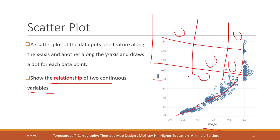The scatter plot matrix is used to show the relationships among three or more variables. A single scatter plot is great for showing the relationship between two variables, but if you want to show relationships among three or more variables, you can create a scatter plot matrix. We will see that one in our lab.